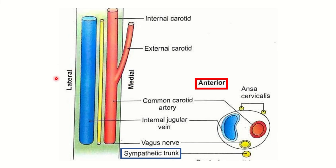In this picture we can see the medial side and the lateral side, and this is the carotid sheath. Within the carotid sheath, medially there is the common carotid artery and internal carotid artery. Laterally you can see a vein, which is the internal jugular vein.